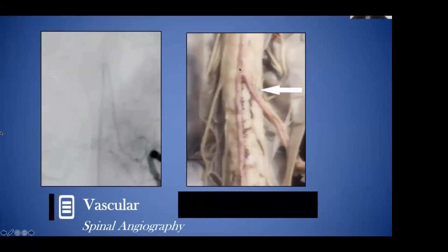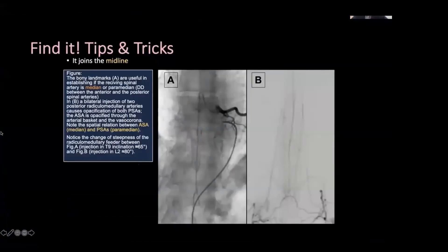The artery of Adamkiewicz is a key structure and you recognize it because of the hairpin bend and its central placement. Here's the cadaveric section and here's the angiographic section. It's very important in any spinal angiography procedure to be aware of where Adamkiewicz is, as well as the other key structures depending on the region of the spine you're examining.